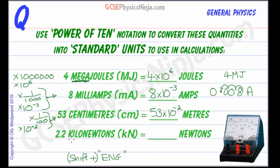Finally, you need to know what kilo means. And kilo means multiplying by a thousand. So, another way of writing that is times 10 to the power of 3. And so, we can write this as 2.2 times by 10 to the power of 3.